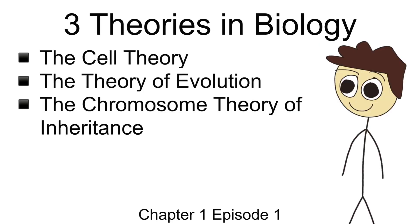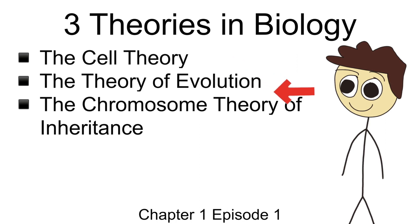These five traits basically set the foundation for three of the most famous theories in all of biological science. The first one being the cell theory, the second is the theory of evolution, and finally the chromosome theory of inheritance. Now before we talk about the theories, let's go ahead and talk about the people involved in those discoveries.